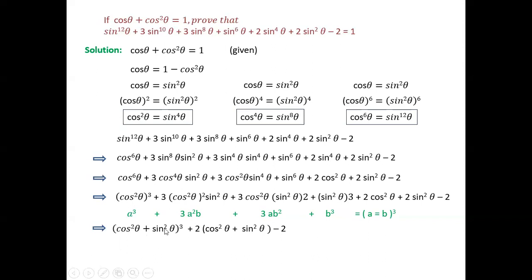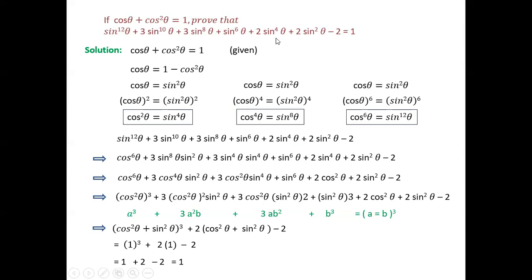This becomes (cos²θ + sin²θ)³ + 2(cos²θ + sin²θ) - 2. Since cos²θ + sin²θ = 1, this is 1³ + 2×1 - 2 = 1 + 2 - 2 = 1. Therefore we have proved that the expression equals 1, given that cos θ + cos²θ = 1.